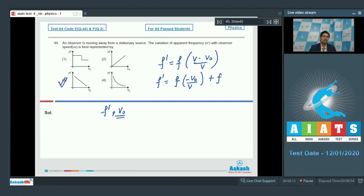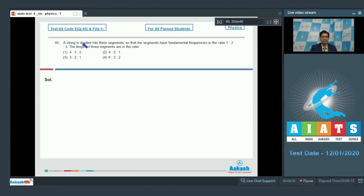Now, let us proceed to the last question of the test, which is question number 45. Question number 45 says the string is divided into three segments so that the segments have fundamental frequencies in the ratio 1 is to 2 is to 3. The lengths of the three segments are in ratio. Dear students, the frequency of a stretched string is equal to 1 by 2l under root t by mu, which means that the frequency n is inversely proportional to length.